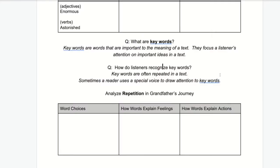So now, what are key words? Key words are words that are important to the meaning of a text. They focus a listener's attention on important ideas in a text. Good readers can understand the main idea of a text by looking at key words or words that are repeated. Key words are often repeated in a text, and sometimes a reader uses a special voice to draw attention to them. Certain words may be emphasized, and when a reader slows down during a certain part of the text, that usually means they are emphasizing a key word or key idea.